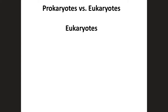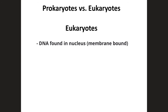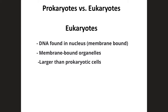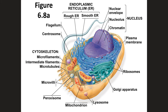Eukaryotic cells are more complex than prokaryotic cells. Their DNA is found in the nucleus, which is a membrane-bound structure. They also have many membrane-bound organelles. We will be talking about each one and what they do throughout the rest of this lecture. The cytoplasm is found in the region between the plasma membrane and the nucleus. Eukaryotic cells are larger than prokaryotic cells. Protists, fungi, animals, and plants all consist of eukaryotic cells. In this figure, you can see an example of a eukaryotic cell.